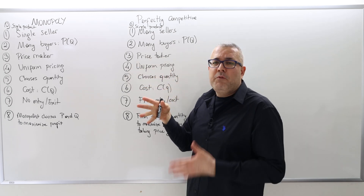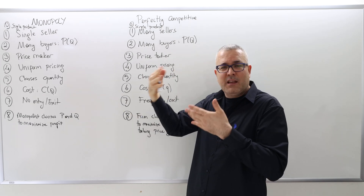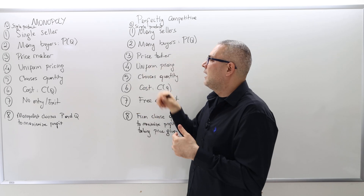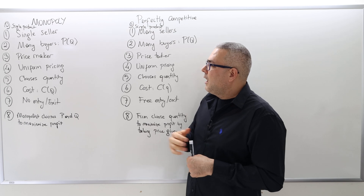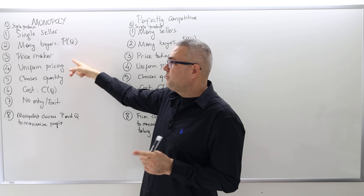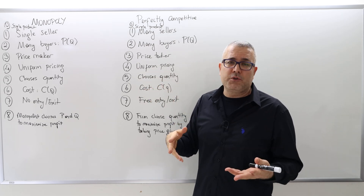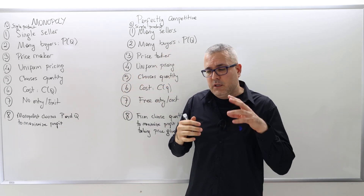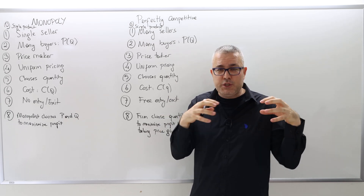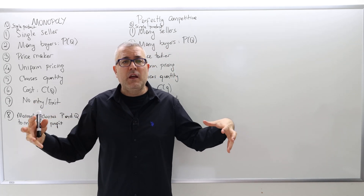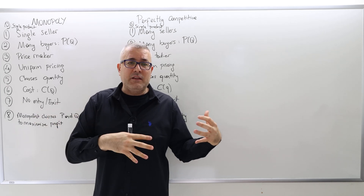The monopolist not only chooses its price but also chooses its quantity to maximize its profit. The perfectly competitive firm also chooses quantity, but that is its only choice — the price is fixed by the market. So the monopolist operates in a less constrained environment with the freedom to choose both price and quantity, giving it an additional degree of freedom compared to the perfectly competitive firm.